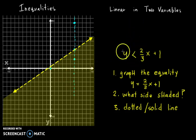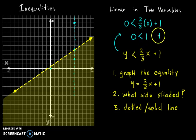So your y is zero and your x is zero. So let me just do that here. Zero is less than two-thirds times zero plus one. So I get a statement, zero less than one. And then I ask myself, is this true?